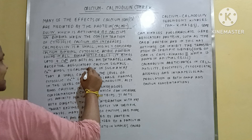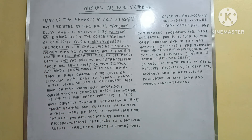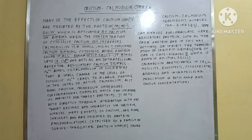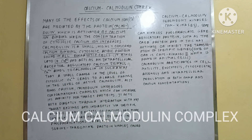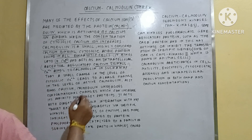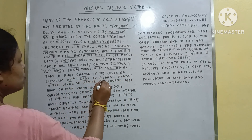Calmodulin acts as an intracellular receptor for regulatory calcium signals. When the calmodulin protein molecule binds with the four calcium ions, it becomes activated and produces calcium signals. Calcium binds to calmodulin in such a way that a small change in the level of active calmodulin leads to a large change in the level of active calmodulin.